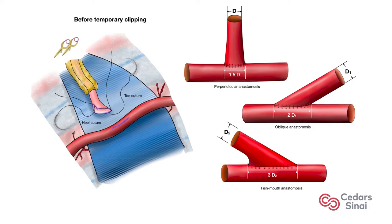The length of the arteriotomy should accommodate the donor vessel. In general, for a perpendicular anastomosis, the length is approximately one and a half times the diameter of the donor. For an oblique anastomosis, it is two times the diameter, and for a fish mouth it is three times the diameter.